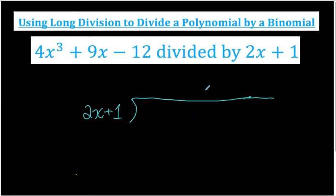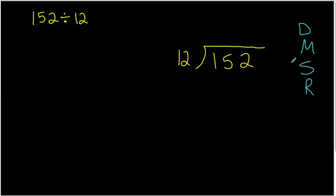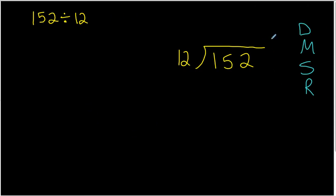Before we do the long division of these polynomials, it's important that you understand how to do long division when we just have two constant terms — like how do we do 152 divided by 12 using long division? You start by writing your dividend here, your divisor here, and then follow these four steps: divide, multiply, subtract, repeat.